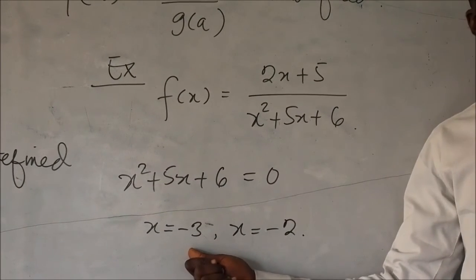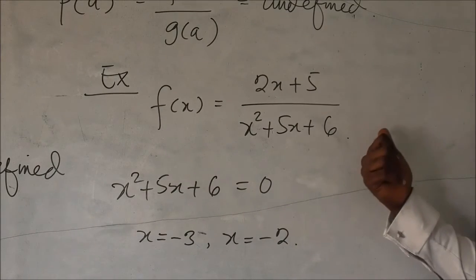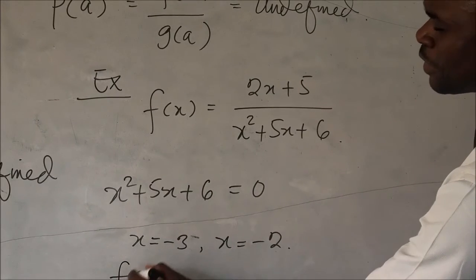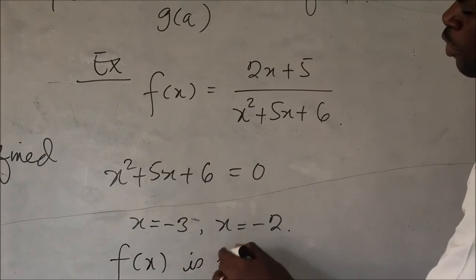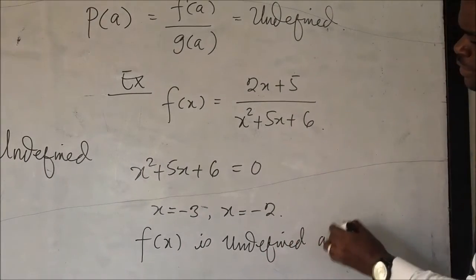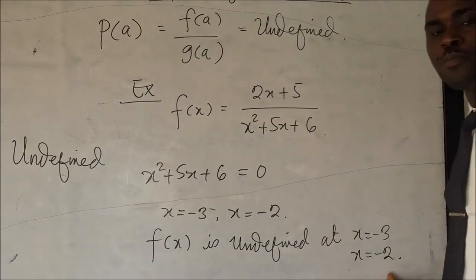These two points, minus 3 and minus 2, are the point of discontinuity. They are the values for which f of x is undefined. So f of x is undefined at x equals minus 3 and x equals minus 2.